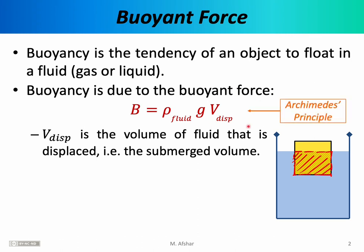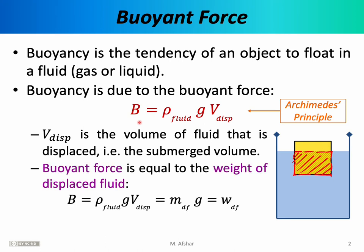This equation is sometimes known as Archimedes' principle, in honor of the Greek mathematician and engineer who first described the concept of buoyancy. Now, Archimedes probably did not describe buoyancy in this form. This equation is a sophisticated and modern description of buoyancy. Archimedes probably said something closer to this statement: the buoyant force is equal to the weight of the displaced fluid. Starting from our equation, we can basically derive Archimedes' principle as follows.